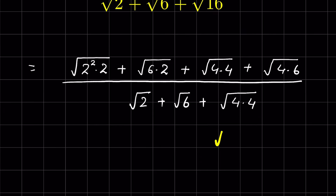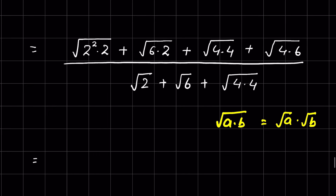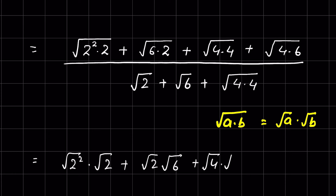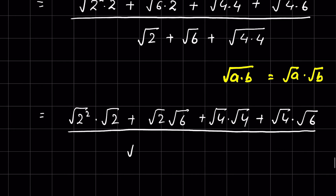We know when a times b is under square root, we can write it as square root of a times square root of b. So this will be square root of 2 squared times square root of 2, plus square root of 2 times square root of 6, plus square root of 4 times square root of 4, plus square root of 4 times square root of 6, upon square root of 2 plus square root of 6 plus square root of 4 times square root of 4.